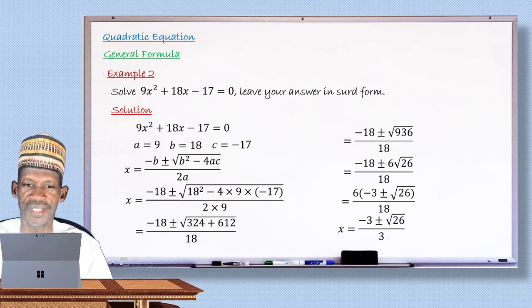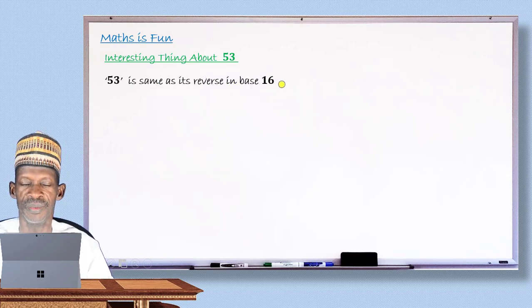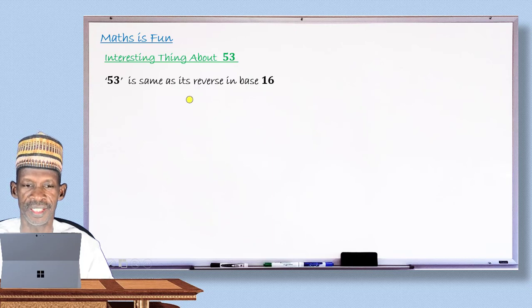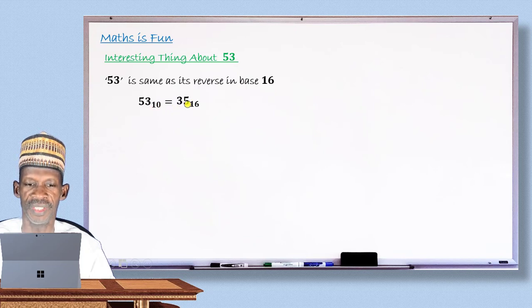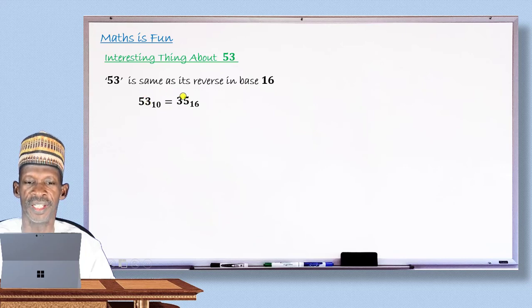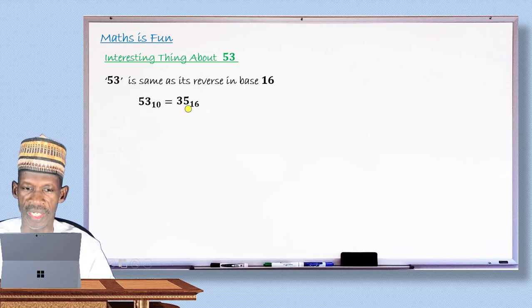I will now explain what is interesting about the number 53. 53 in base 16 is the same as its reverse. If you convert 53 to base 16 correctly, the result you get is 35 in base 16. And if you look at 53 and 35, they are reverses of each other. This is what is interesting about the number 53 — it is a number where converting it to base 16 gives a result that is the reverse of its digits. Thank you for your attention. We will see more interesting things in mathematics in our subsequent lessons.